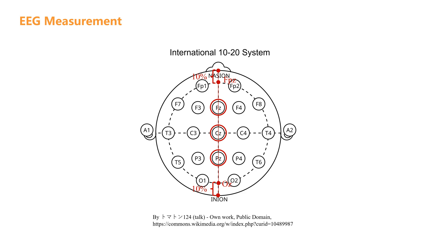The distance from the FPZ to the nasion, as well as the distance from the OZ to the inion, each accounts for 10% of the total length of this line. The remaining points are spaced 20% apart along the rest of the line.